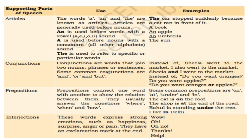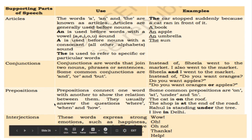Conjunctions join two nouns, phrases, or sentences together. Examples are and, or, and but. Prepositions connect one word with another to show the relation between them. Examples are on, at, under, and in. Interjections are words that express strong emotions like happiness, sadness, or surprise. Examples are wow, oh, no, thanks, and help.